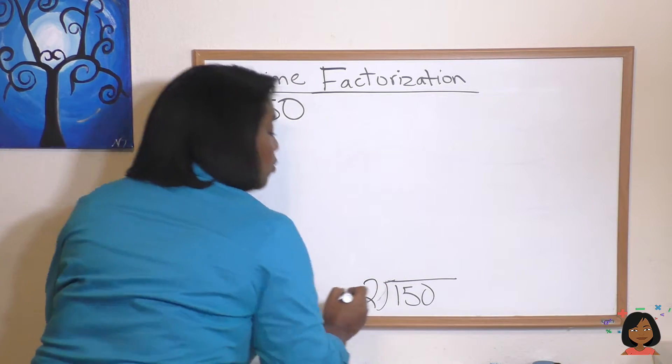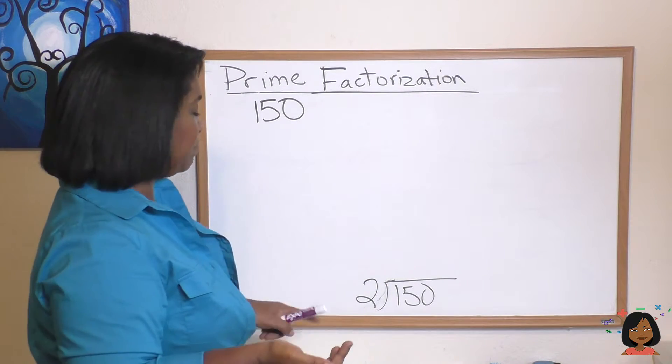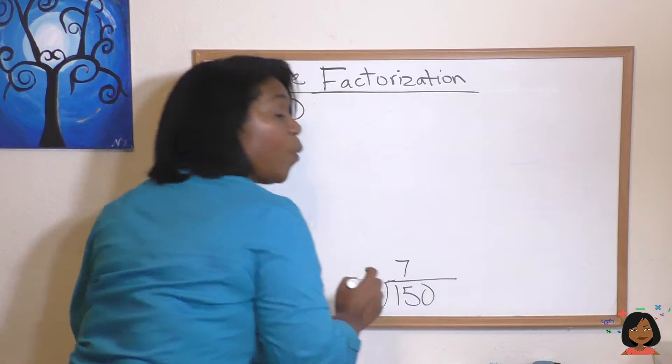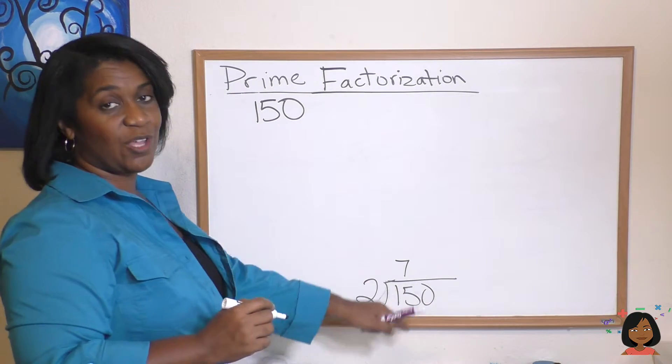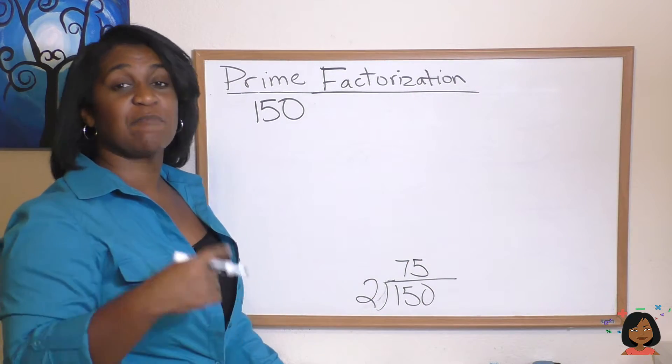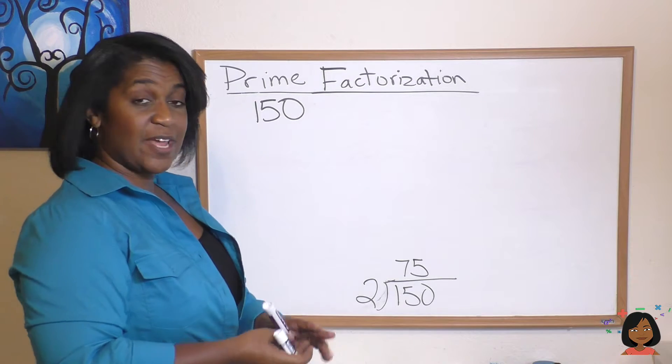So we're going to do the mental math and figure out the division. 2 goes into 15 seven times. 1 is left over. And then 2 goes into 10 five times. So that's the first layer of my division by primes. And then I go again.